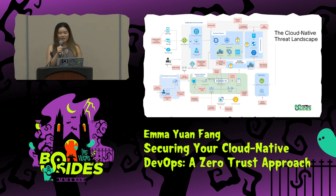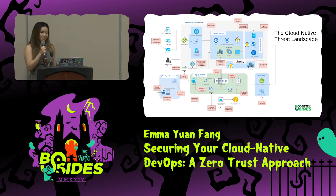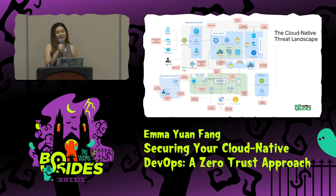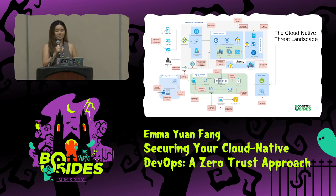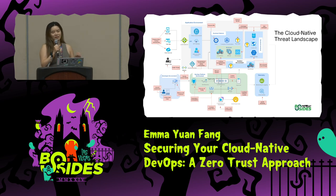I've broken down the cloud native environment into three key areas: the developer's environment, the DevOps platform environment, and the application/infrastructure environment. Starting with the developer's environment — developers love IDE plugins to improve code efficiency and productivity, including security. But this raises the question: are we trusting those extensions? Then in the DevOps platform, build processes and CI/CD pipelines are happening — Git repos and public container registries are vulnerable to supply chain attacks.